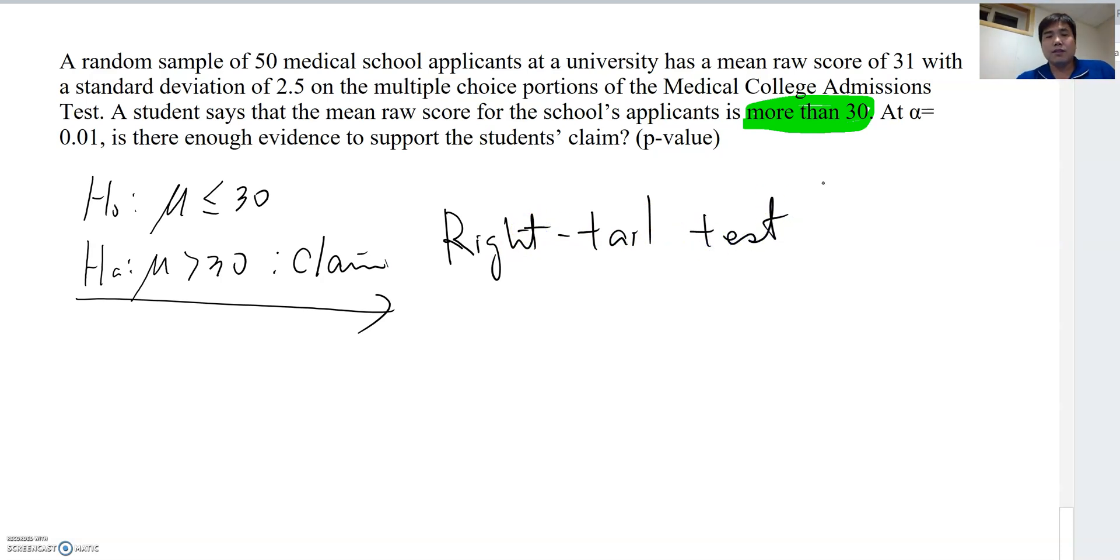Let's analyze this hypothesis test. First, I'll collect all known data. A random sample of 50, so n equals 50. Mean raw score, x-bar equals 31. Standard deviation s equals sigma, because n is bigger than 30, we assume s equals sigma, which equals 2.5. And alpha equals 0.01.